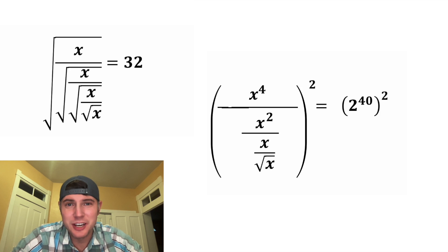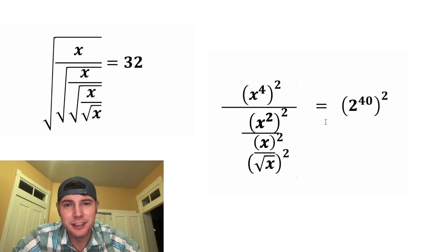And next step, we're going to square both sides of the equation. On the left-hand side, this square will distribute to all four of these terms. It's going to look something like this. This x to the 4th squared will become x to the 8th.